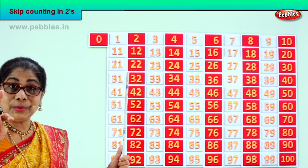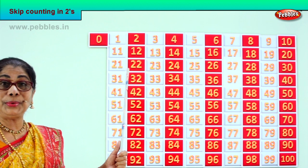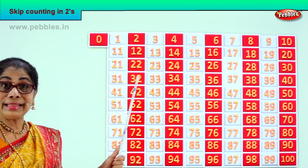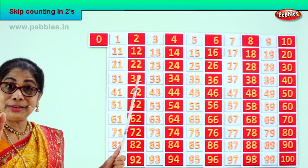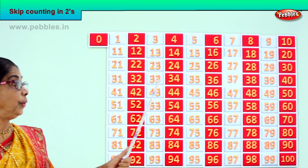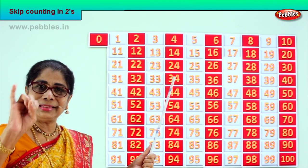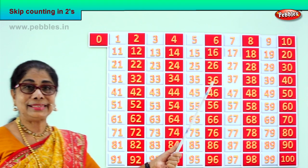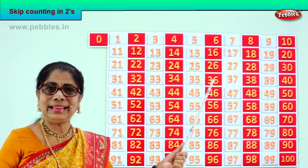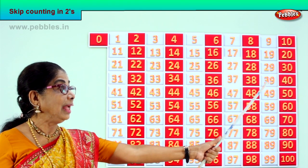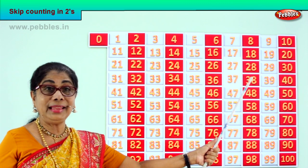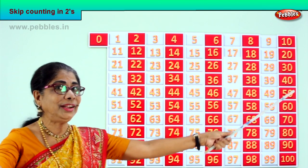Good. Next: thirty-one, thirty-two. After thirty-two: thirty-three, thirty-four. Next: thirty-five, thirty-six. After thirty-six: thirty-seven, thirty-eight. After thirty-eight: thirty-nine, forty.